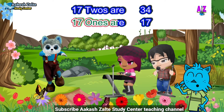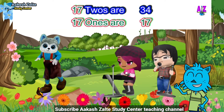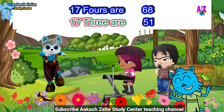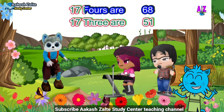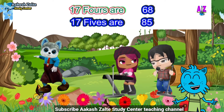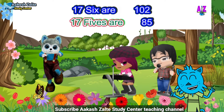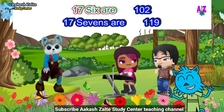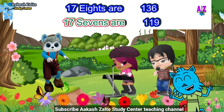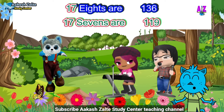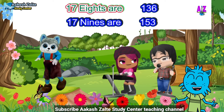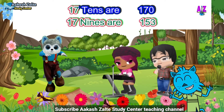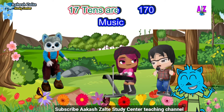Seventeen ones are seventeen, seventeen twos are thirty-four, seventeen threes are fifty-one, seventeen fours are sixty-eight, seventeen fives are eighty-five, seventeen sixes are one hundred two, seventeen sevens are one nineteen, seventeen eights are one thirty-six, seventeen nines are one fifty-three, seventeen tens are one seventy.